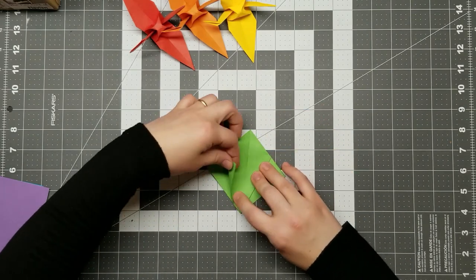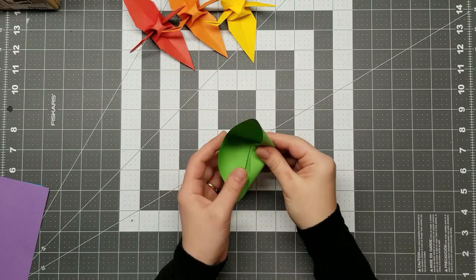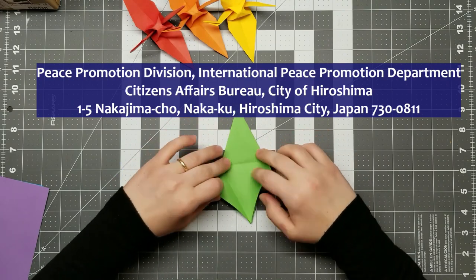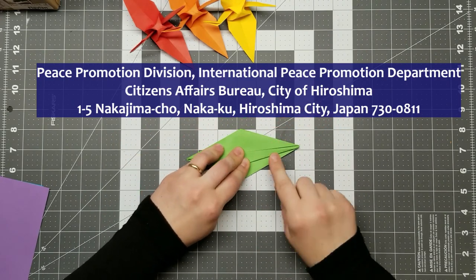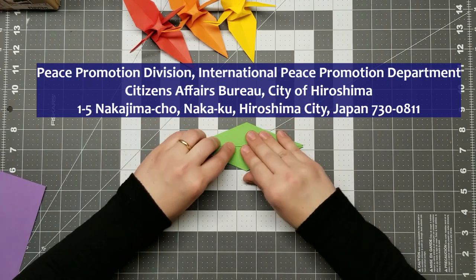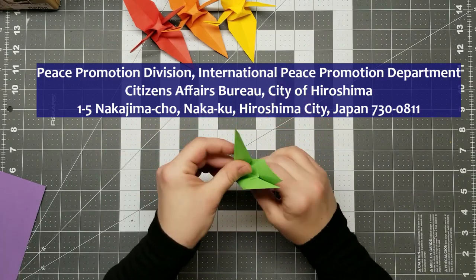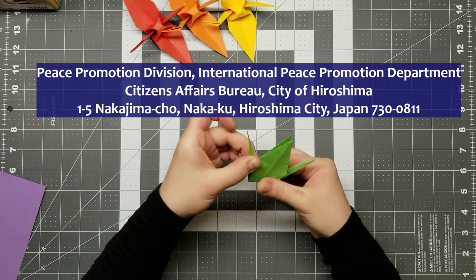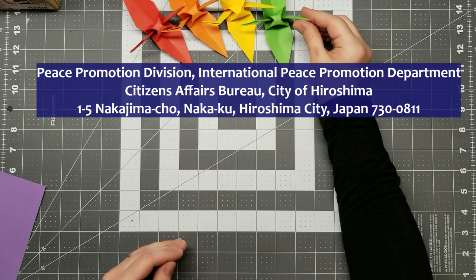You can also show your support and participate by folding and sending your own 1,000 cranes to this address. Peace Promotion Division, International Peace Promotion Department, Citizens Affairs Bureau, City of Hiroshima, 1-5 Nakajima-Cho, Naka-Ku, Hiroshima City, Japan, 730-0811.